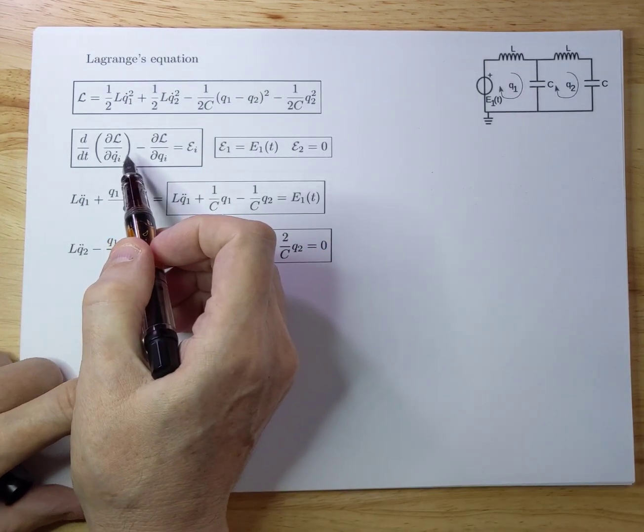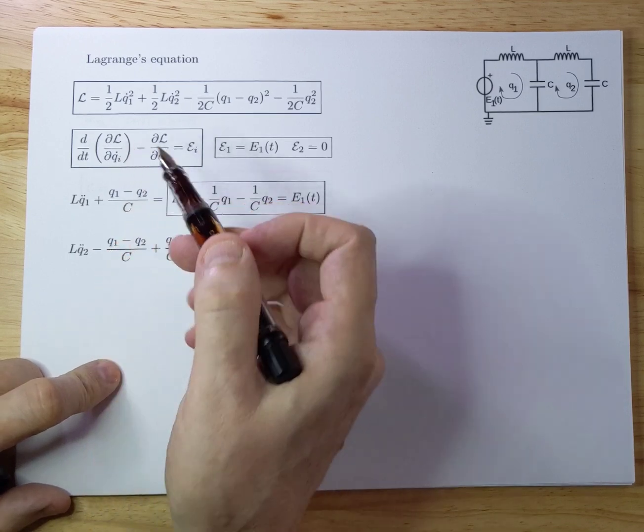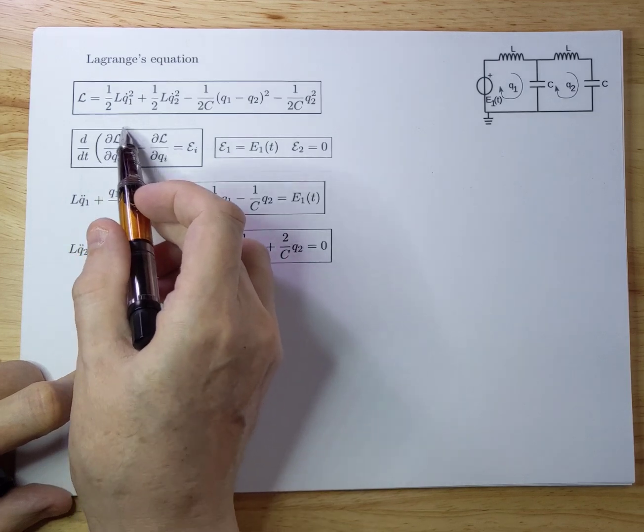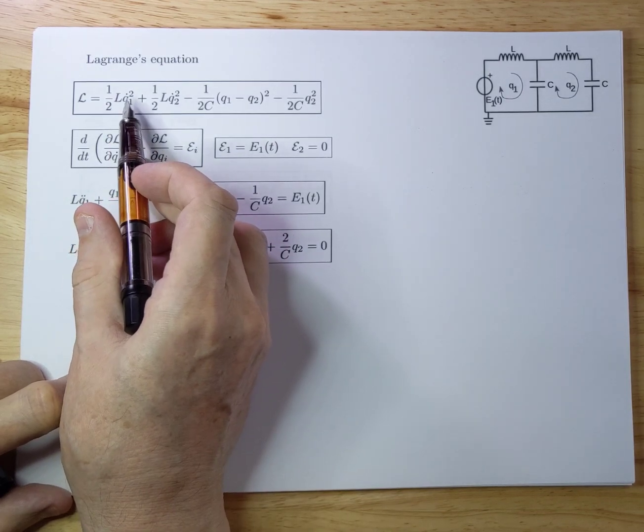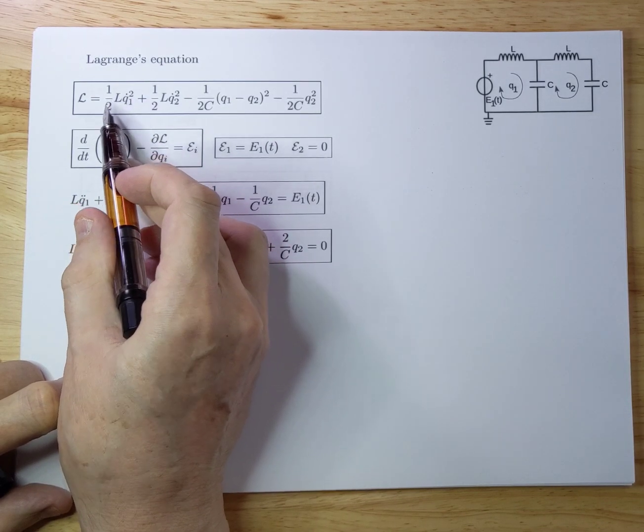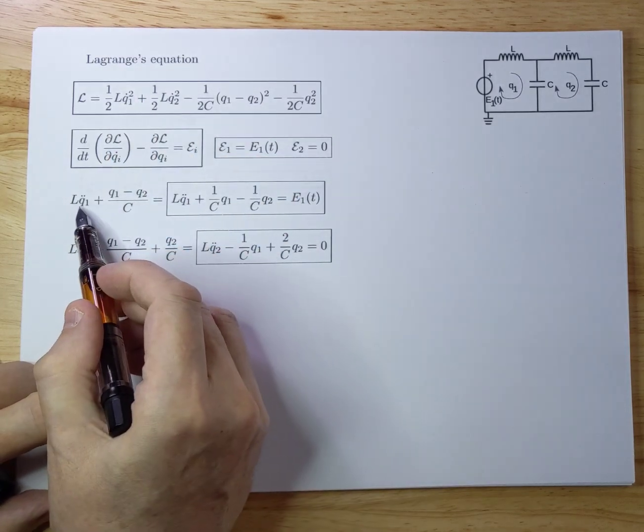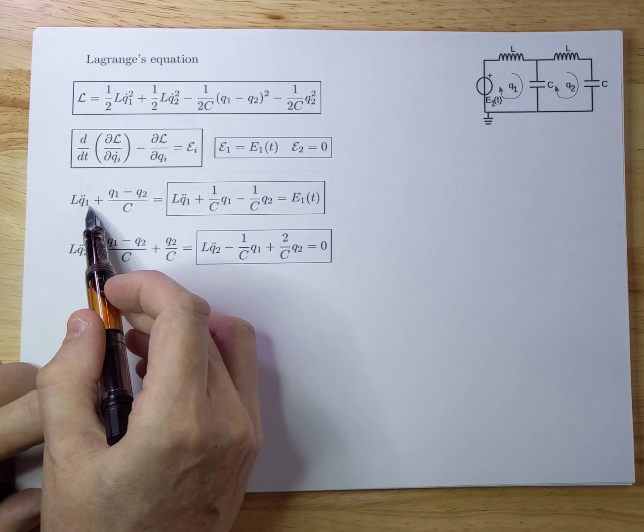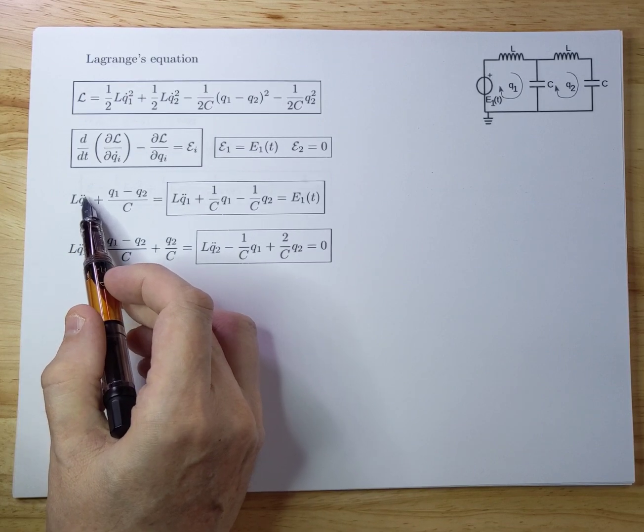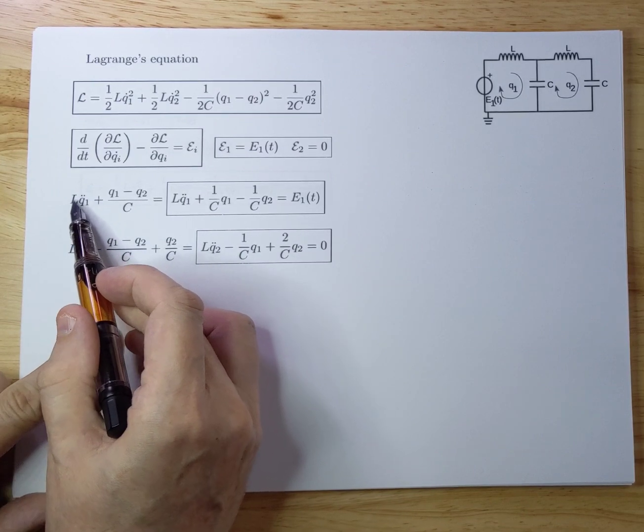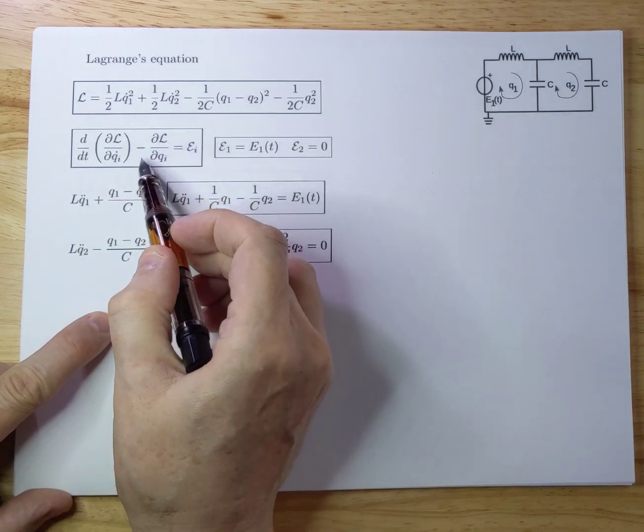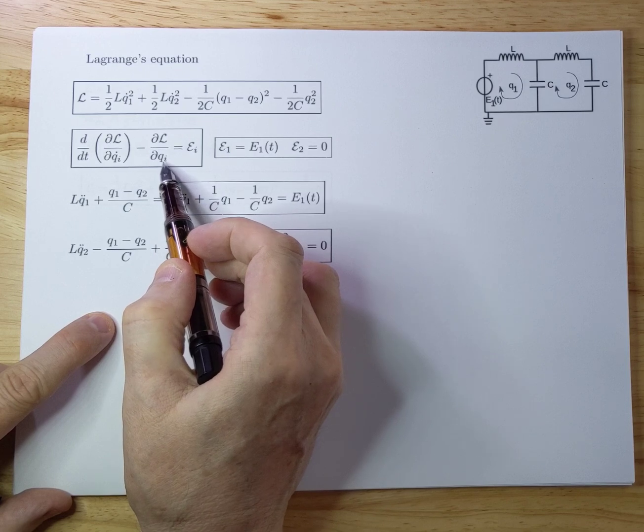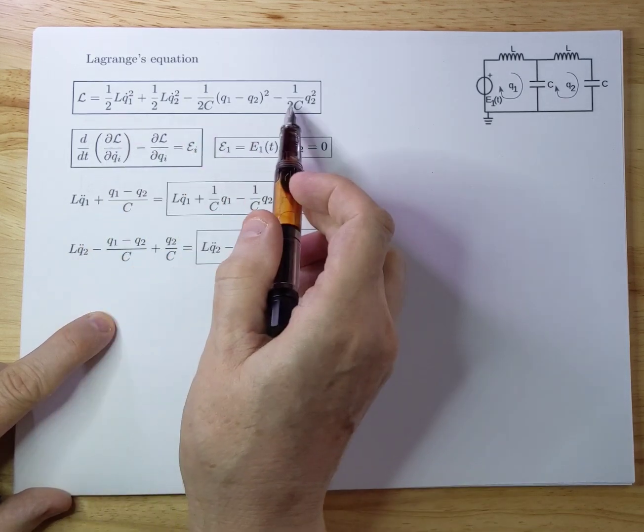Let's start with Q1. Let's start to differentiate the Lagrangian with respect to Q1 dot. According to this piece. That will be L times Q1 dot times 2 divided by 2 is LQ1 dot. Here. You have to differentiate that towards T. So you get an LQ1 double dot over here. So that's the first term.